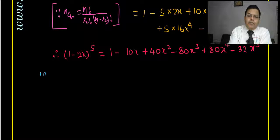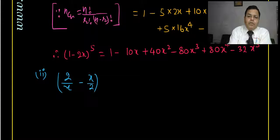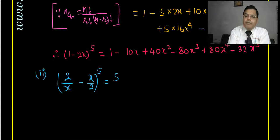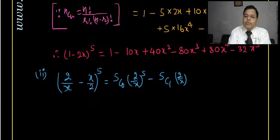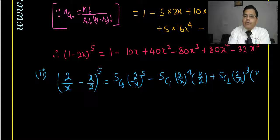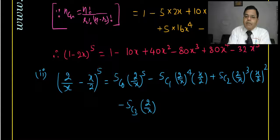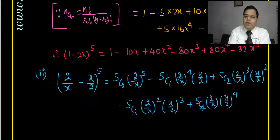The second question is: expand 2 by x minus x by 2, whole to the power 5. We write: 5C0 times 2 by x to the power 5, minus 5C1 times 2 by x to the power 4 times x by 2, plus 5C2 times 2 by x cubed times x by 2 squared, minus 5C3 and so on, continuing with 5C4 times 2 by x times x by 2 to the power 4, minus 5C5 times x by 2 to the power 5.